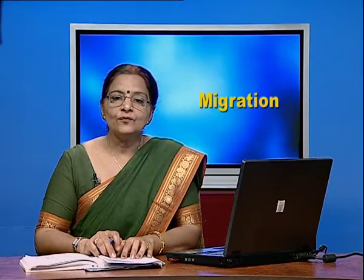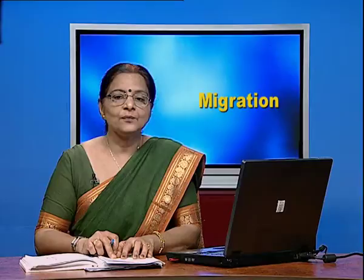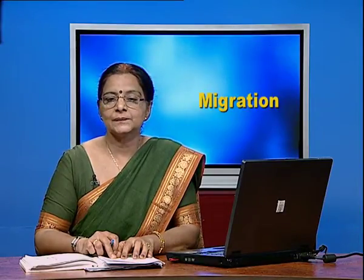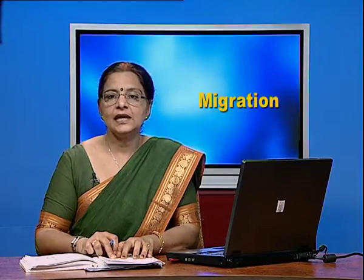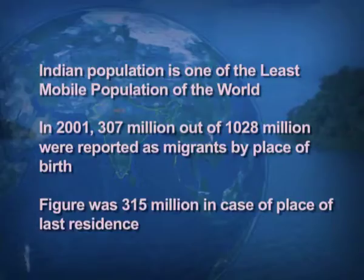There are a few facts about the Indian population and their movement. The Indian population is one of the least mobile populations of the world. In 2001, 307 million people — around 30 percent of the population — were reported as migrants on the basis of place of birth. When considering place of last residence, it was 31 percent of the population.